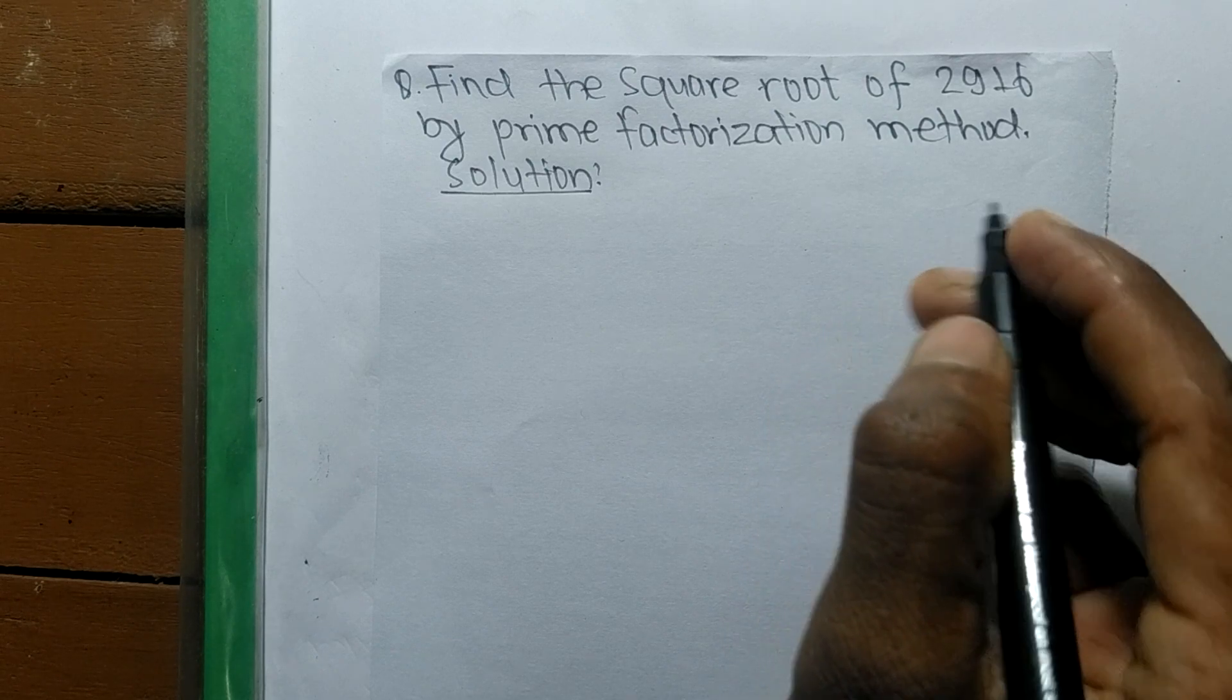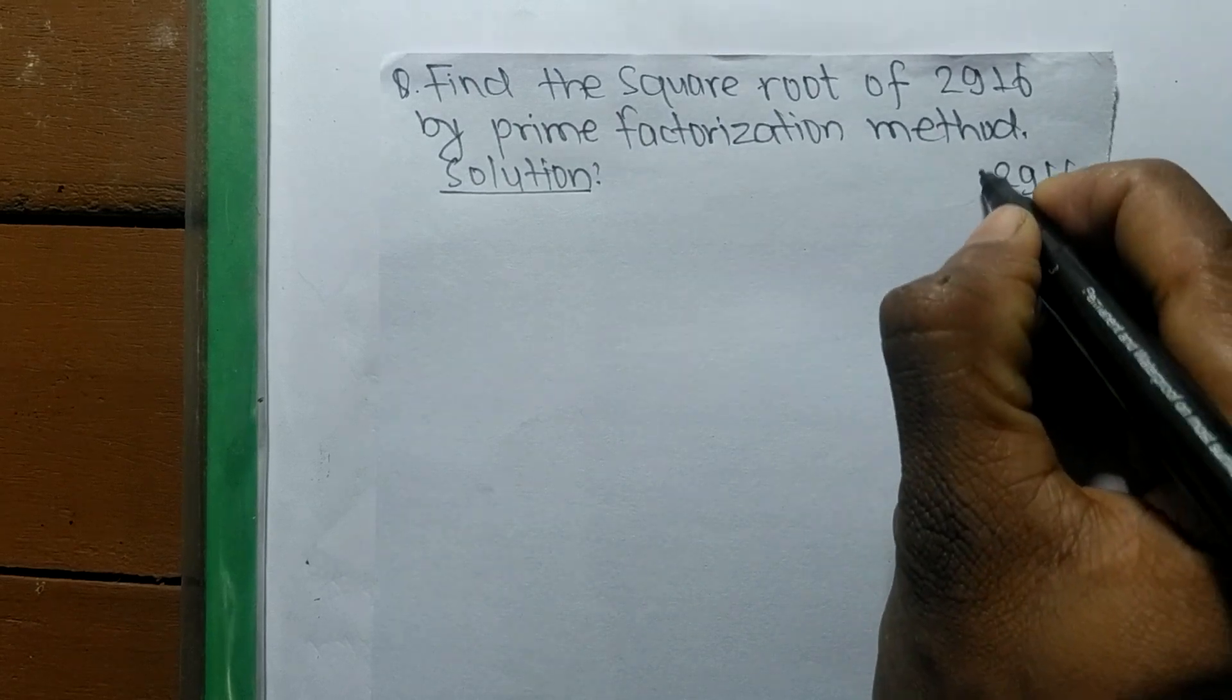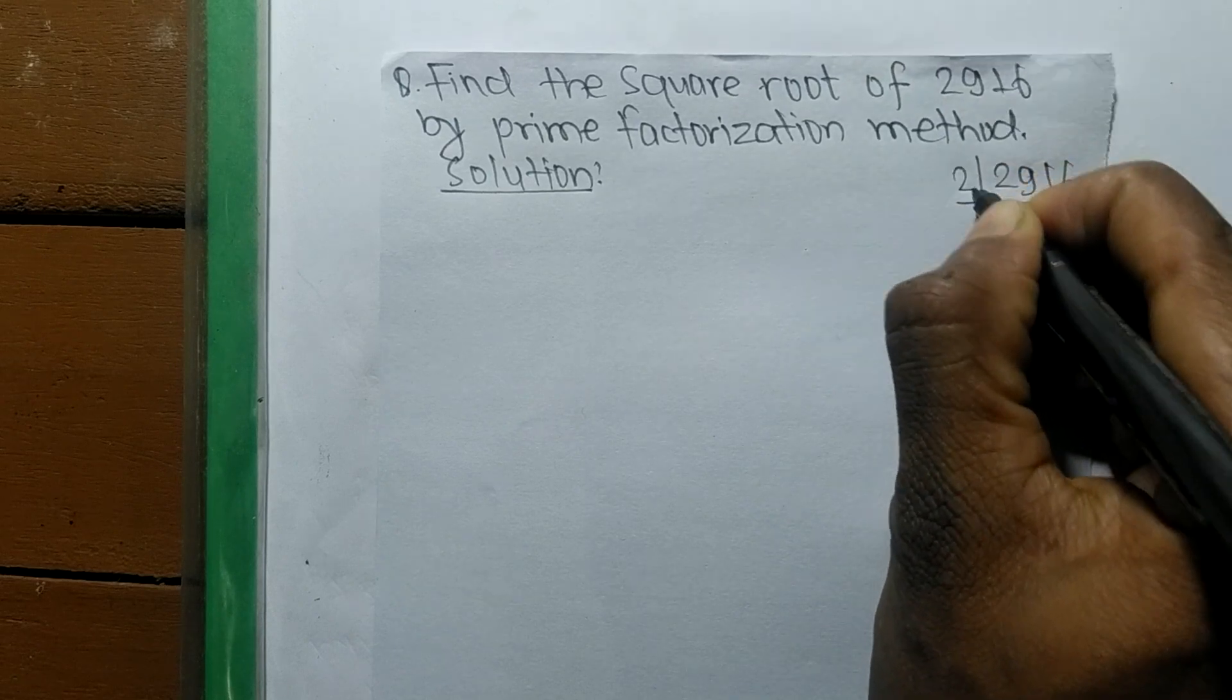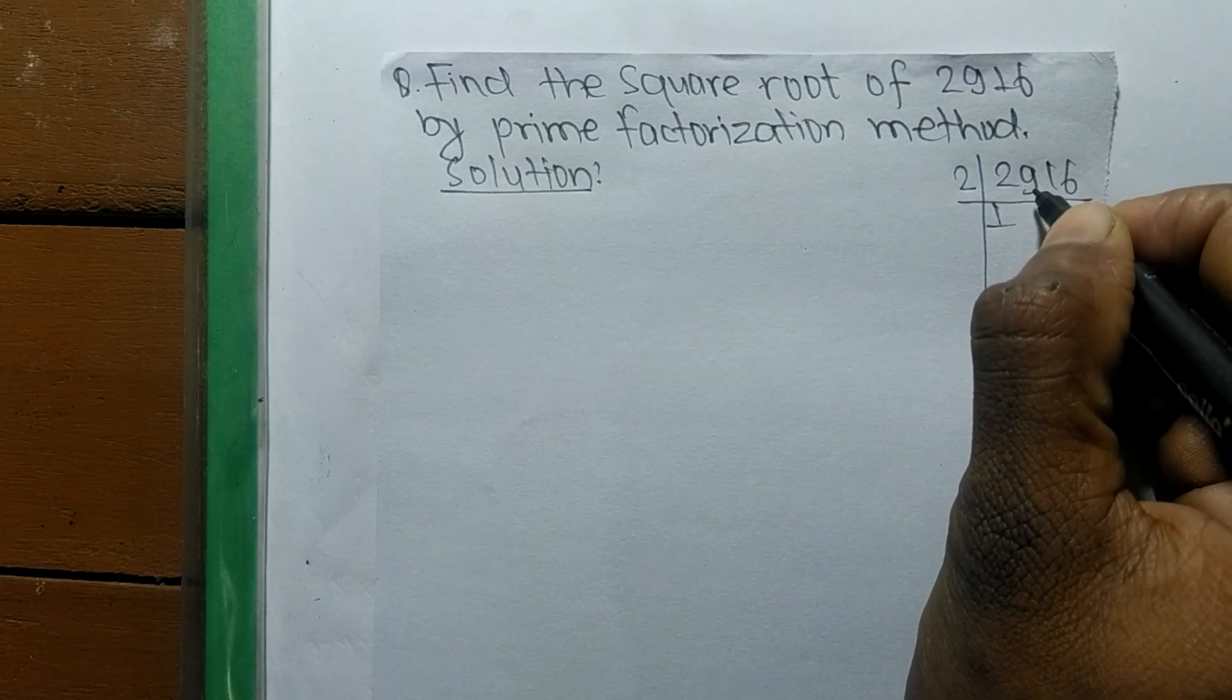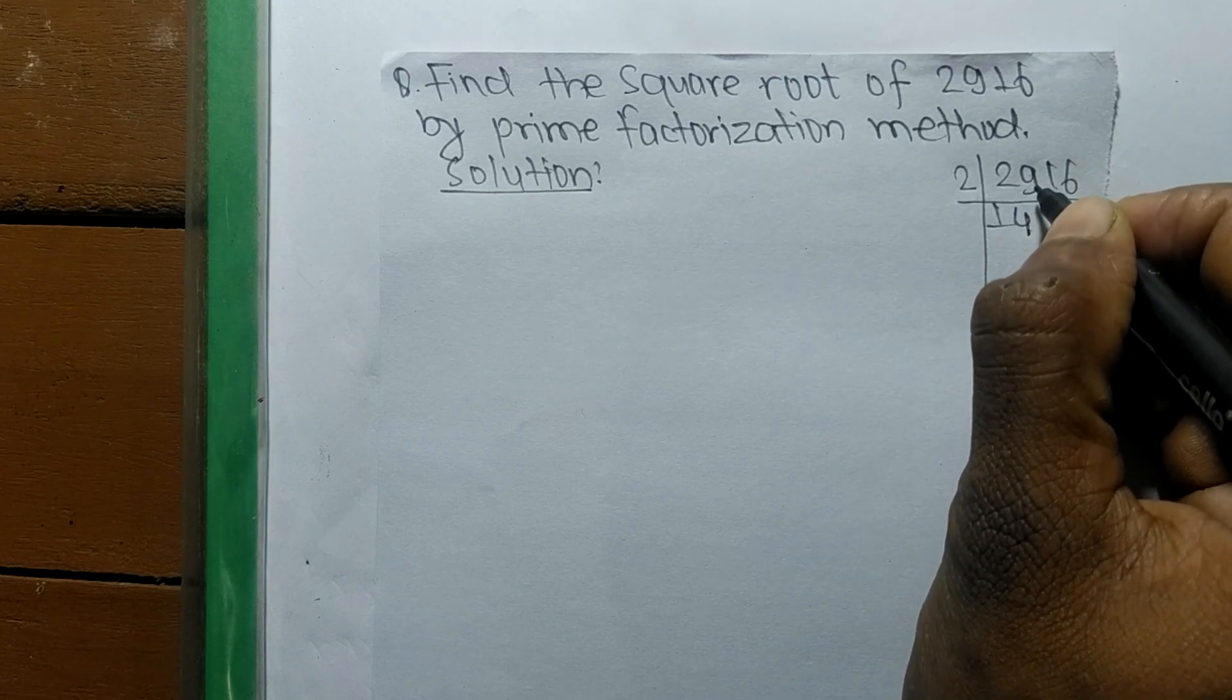So the number here is 2916. Now we have to find its prime factors. So it is 2 times 1458. 2 times 4 means 8 and the remaining is 1.